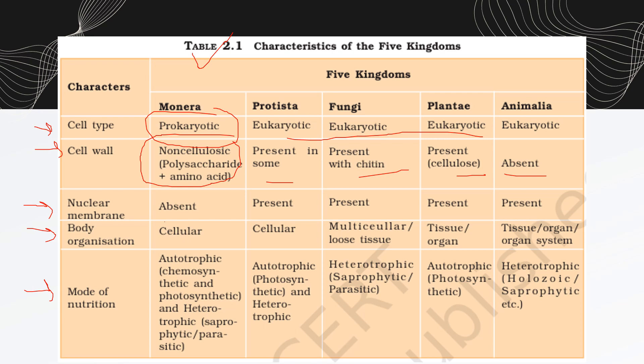Regarding nuclear membrane: it is absent in prokaryotes (Monera) and present in all other kingdoms. Body organization ranges from cellular in Monera, to multicellular, tissue level, organ level, and organ system level, which we study in detail when learning about animal phylums.